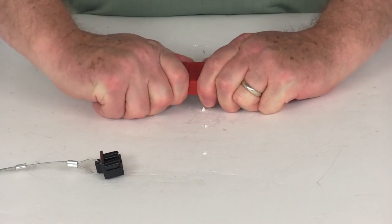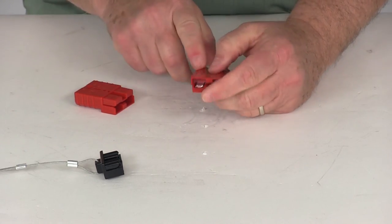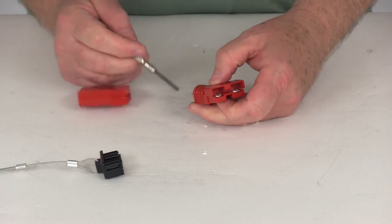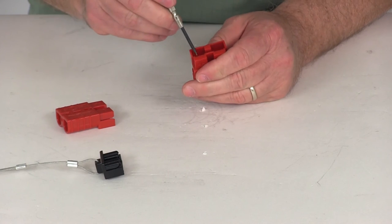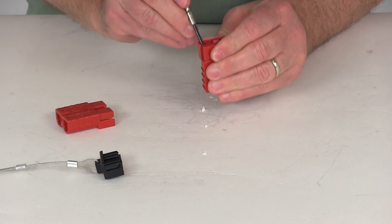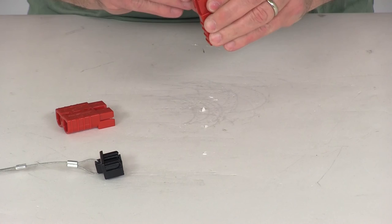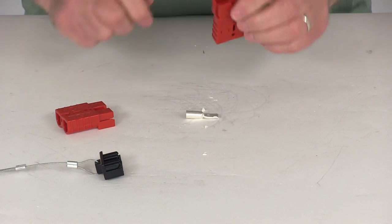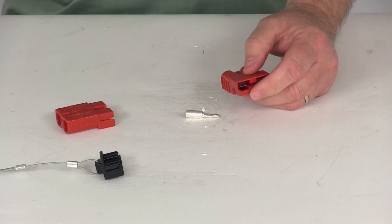Now one other thing I just wanted to show you. If by chance on these terminals you happen to put the positive or the negative in the wrong spot and you need to get it out, all you have to do is take a little screwdriver. There's a copper clip in there that if you just push on, push it back, the terminal will fall right out. You can do that on the other side too and then switch them around if you need to.